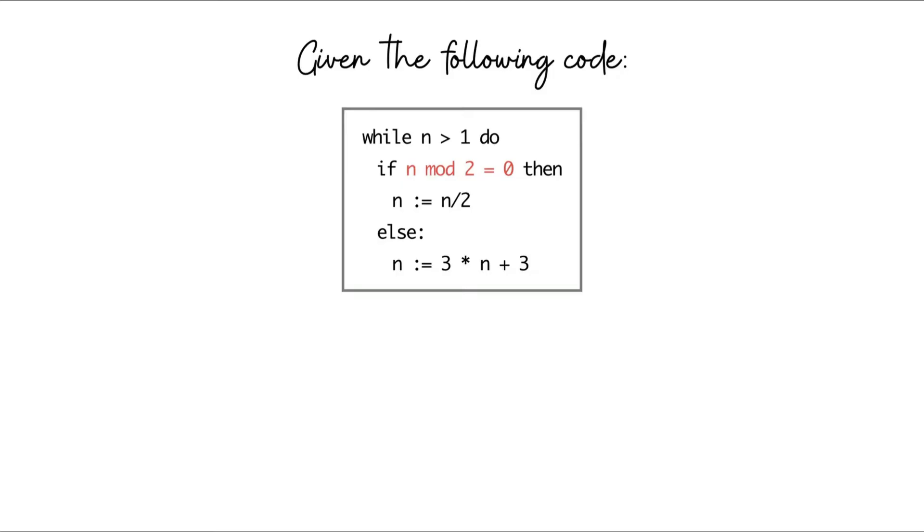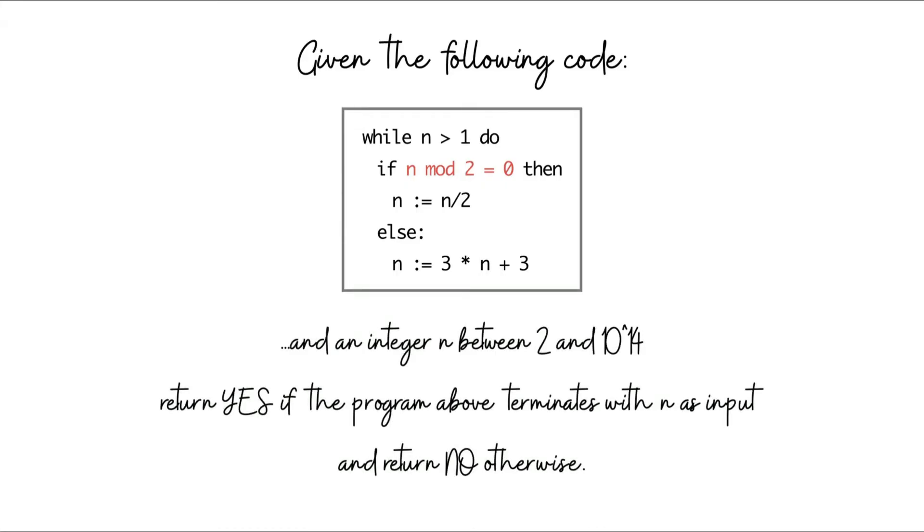You can probably already imagine that there might be values of n for which this while loop just goes on forever and the program never terminates. It turns out that this is precisely our task. We're given a number n as input. This number can range anywhere between 2 and 10 raised to 14, which is to say this can be a pretty big number to begin with. And we have to identify whether this code terminates when n is given to it as input.